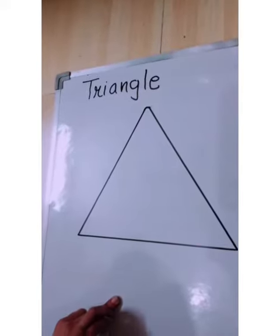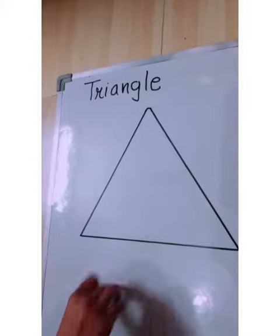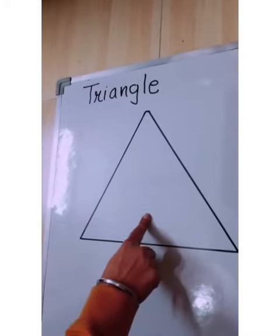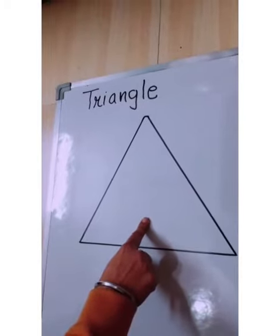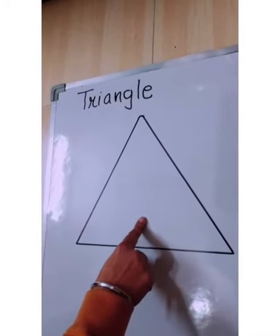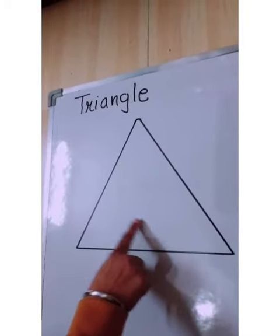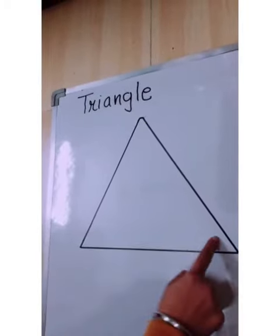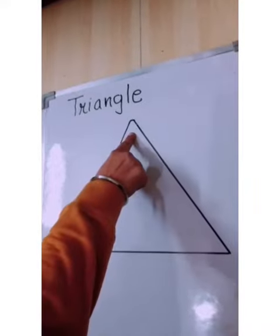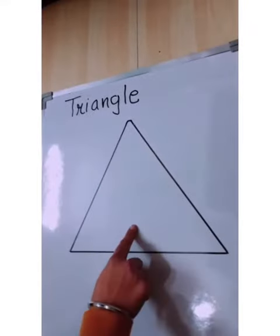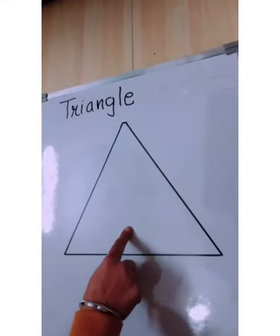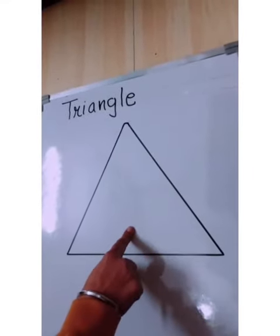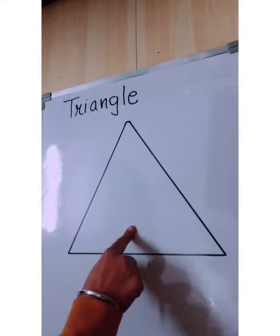Kids, see — which shape is this? This is a triangle shape and it has three corners. So let's see some pictures related with the triangle shape objects.